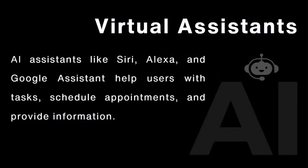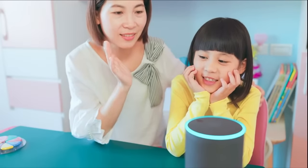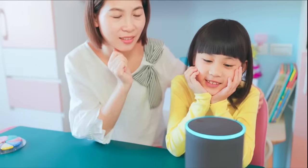Virtual assistants: like Jarvis from Iron Man, we have AI assistants like Siri, Alexa, and Google Assistant. These are narrow AIs — they have some predefined things and will match and give you answers, but apart from that they can't proceed further. They help users with tasks, schedule appointments, and provide information. Once you learn AI, you could build a virtual assistant for your own tasks — it's possible.